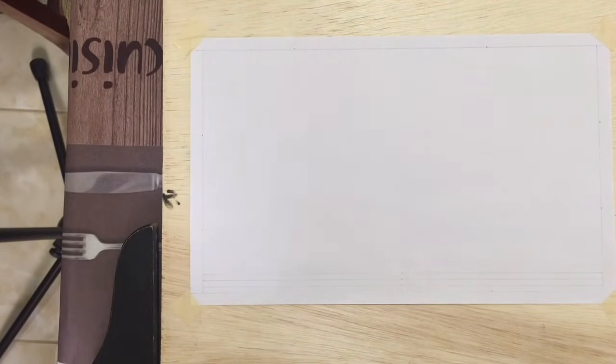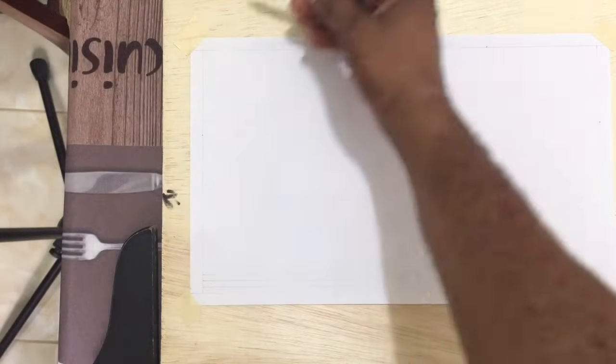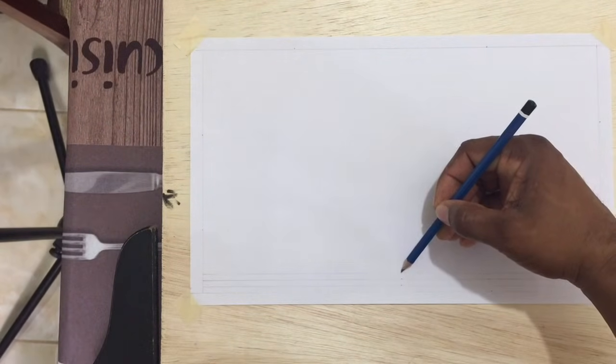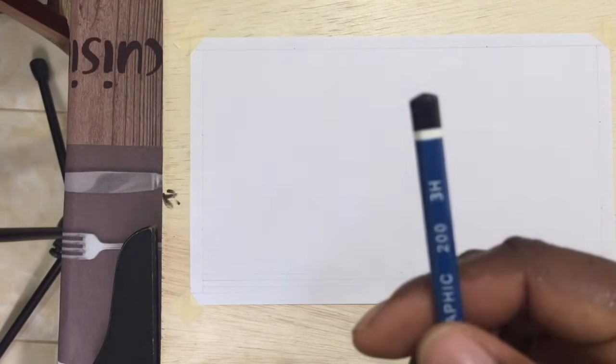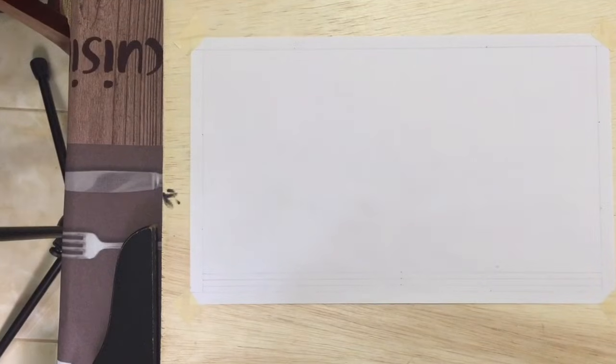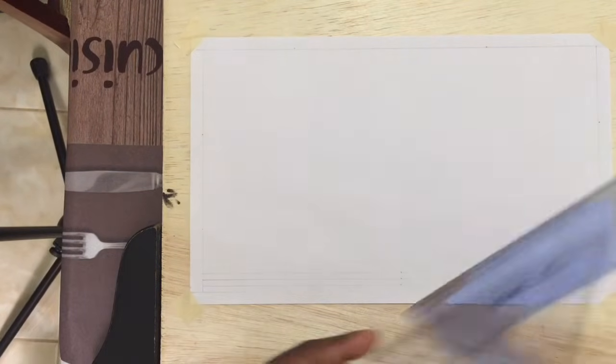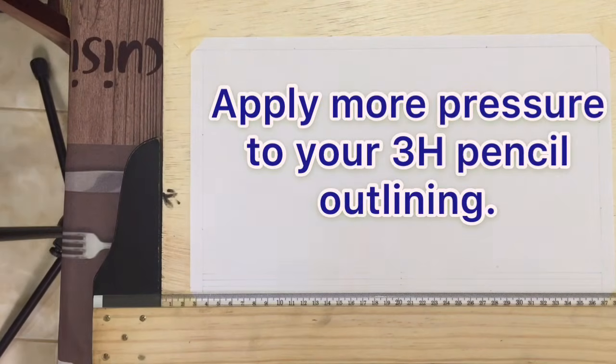Once this is done, we now need to outline our outer border and this top line. To outline we will now be using our 3H pencil, along with our T-square and set square. In order to get a good outline, a little pressure must be placed on the pencil.